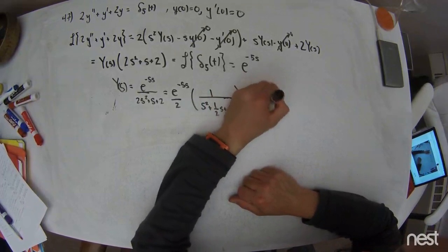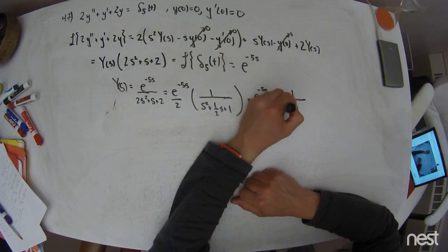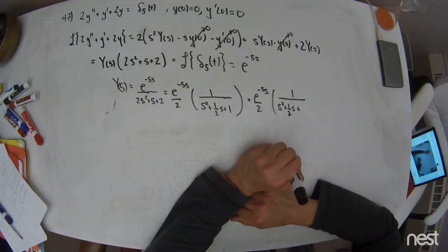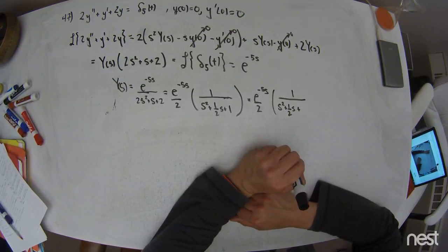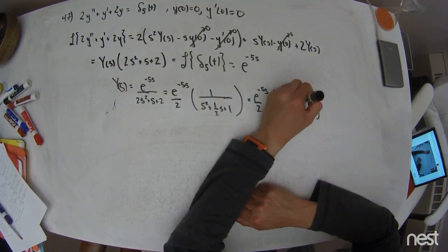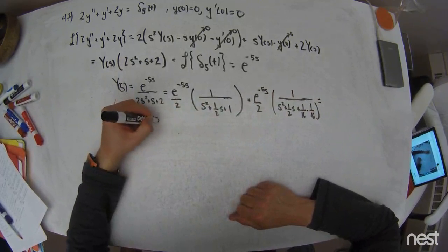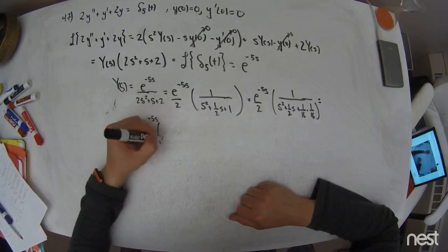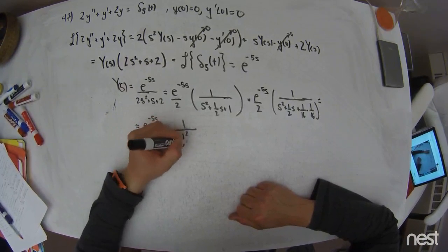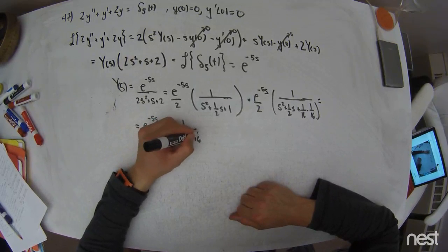Just complete the square in the denominator. That should be your first instinctual thing. So I get s squared plus 1 half s. That's my first instinctual move. Take the 1 half, divide it by 2, which is 1 fourth and squared. So that's 1 sixteenth minus 1 sixteenth. So this is equal to e to the negative 5s over 2 times 1 over s plus 1 fourth quantity squared minus 1 sixteenth.